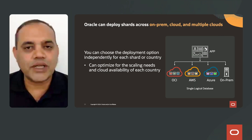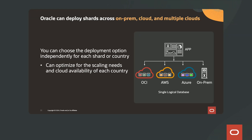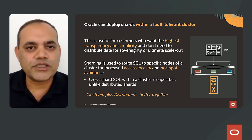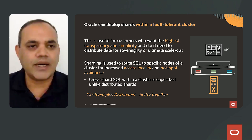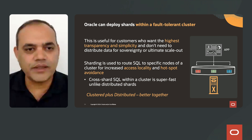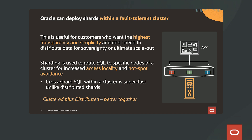Oracle can deploy shards across on-premises, in the cloud, and across multiple clouds. You can choose the deployment option independently for each shard or country, optimized for the scaling needs and cloud availability of each region. Oracle can also deploy shards within a fault-tolerant cluster, useful for customers who want the highest transparency and simplicity without needing distributed data sovereignty or ultimate scale-out. Sharding is used to route SQL to a specific node of a cluster for increased access locality and hotspot avoidance. Cross-shard SQL within a cluster is super-fast, unlike distributed shards.